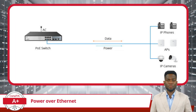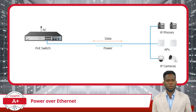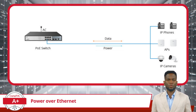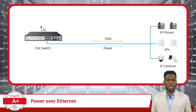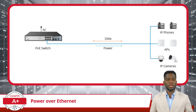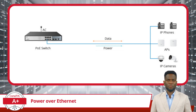So, how does PoE function? There are two primary ways: through a PoE switch or a PoE injector. A PoE switch is a network switch that has the ability to provide power over Ethernet to connected devices. When a compatible device is connected to a PoE-enabled port, the switch detects it and automatically provides the appropriate power.